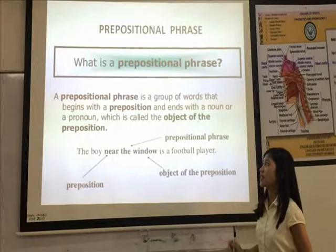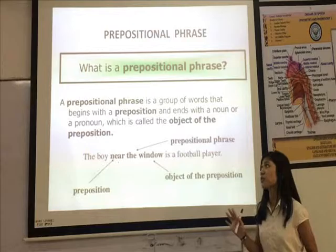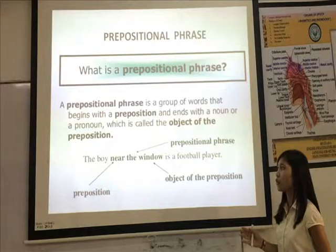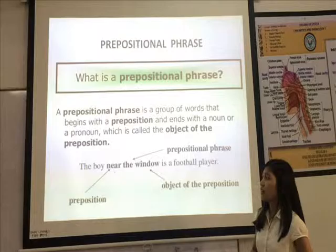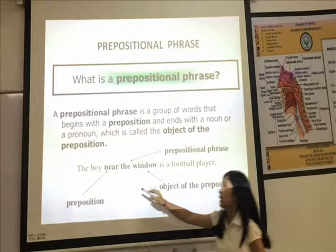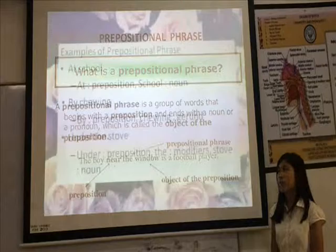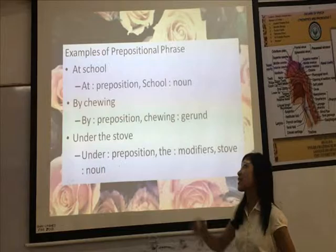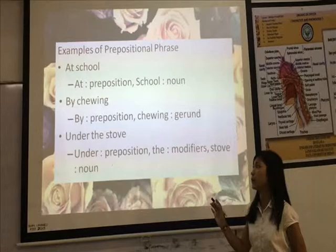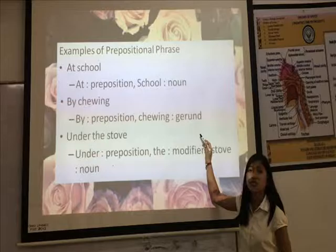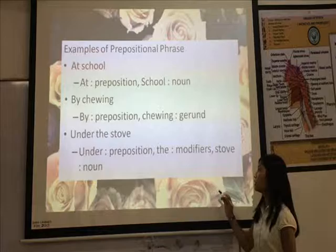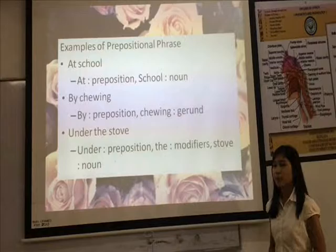A prepositional phrase is a group of words that begins with a preposition and ends with a noun or pronoun, which is called the object of the preposition. For example: going near the window is a football player. 'Near' is a preposition, 'near the window' is the prepositional phrase, and 'window' is the object of the preposition. Other examples: at school — 'at' is the preposition, 'school' is the noun; by the wing — 'by' is the preposition; under the stove — 'under' is the preposition, 'the' is the modifier, and 'stove' is the noun.